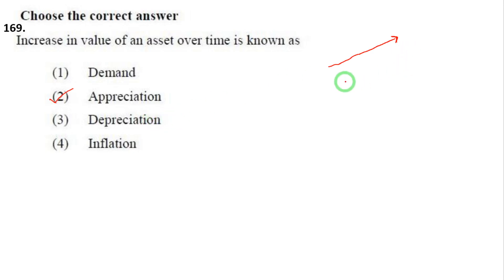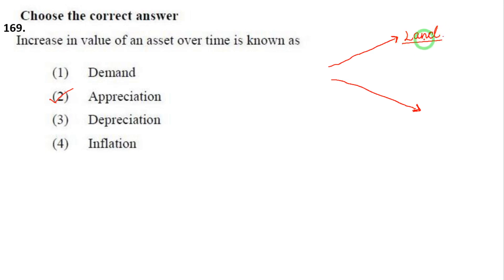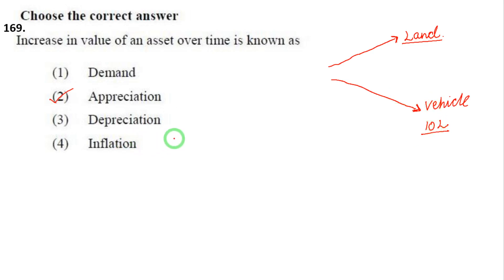Depreciation is the time value of an asset decreasing over time. For example, land appreciates — in maximum cases land value increases. But a vehicle bought at 10 lakhs is a depreciating asset — its value decreases over time. Inflation means money value constantly changes — wealth and money value are affected.